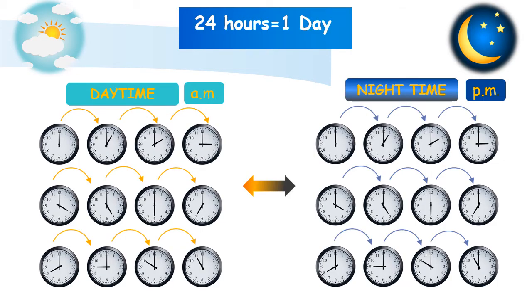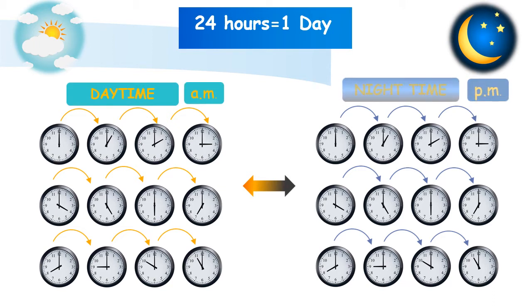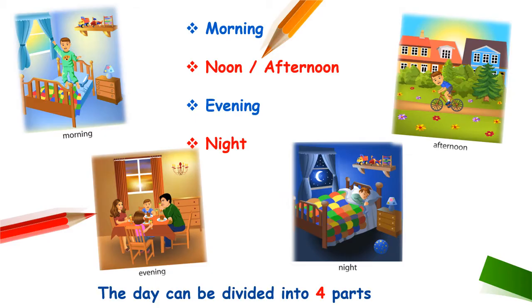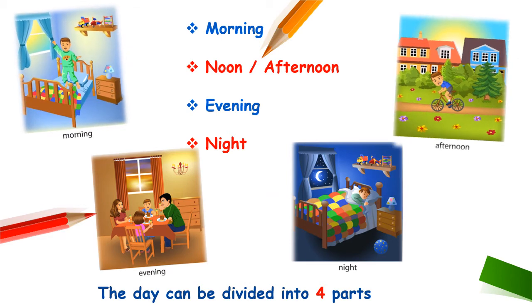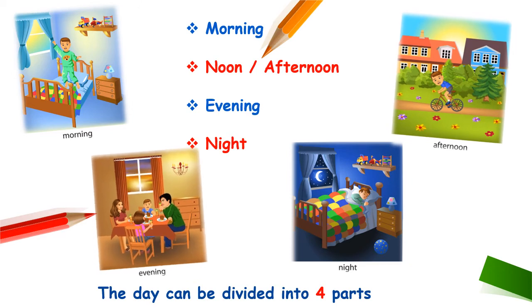There are 24 hours in one day. It is divided into two halves — the first 12 hours we call daytime and refer to as A.M., and the second 12 hours is called nighttime and we refer to as P.M. We can break the day up into four parts: morning, noon, afternoon, evening, and night. Think about what you do during the day — perhaps you play outside in the afternoon and watch a certain TV show at night.